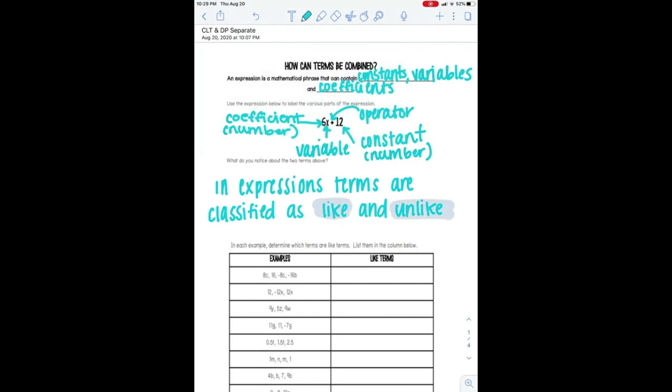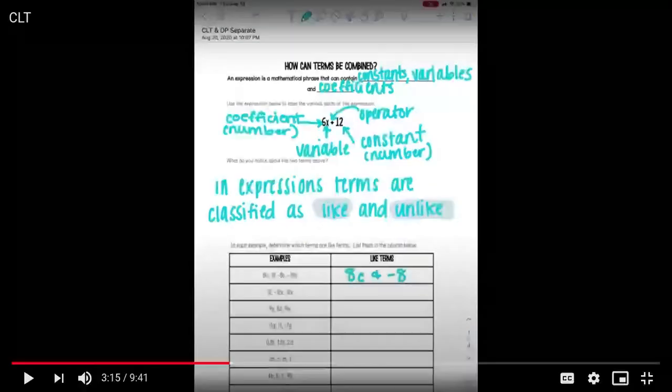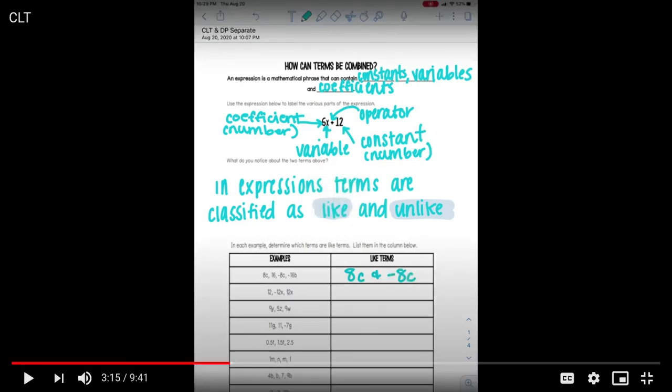I have 8c, 16, negative 8c, and negative 16b. So my like terms are going to be 8c and negative 8c. So even though 16 and negative 16 both have a 16, that does not mean they are like terms because they do not have the same variable. So our positive 16 has no variable and our negative 16 has a variable b attached to it. So they are not like terms. But 8c and negative 8c both have c's attached, making them like terms, okay?